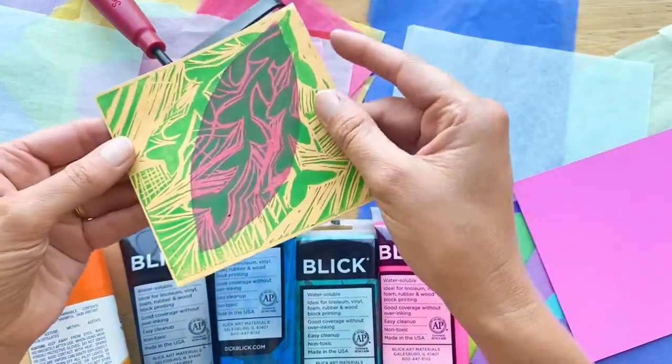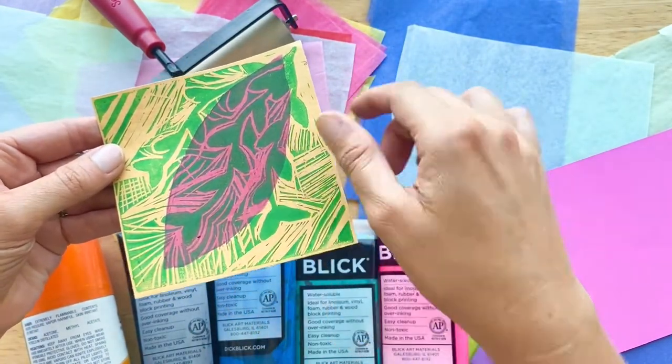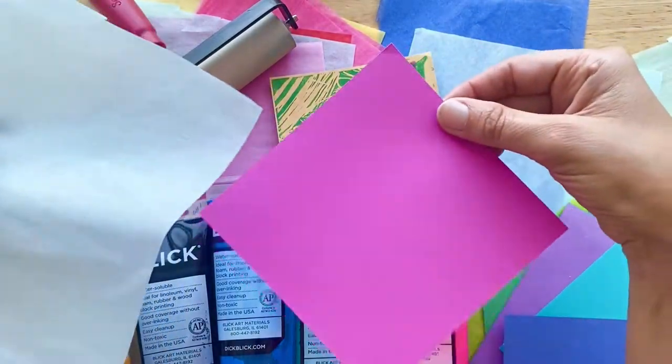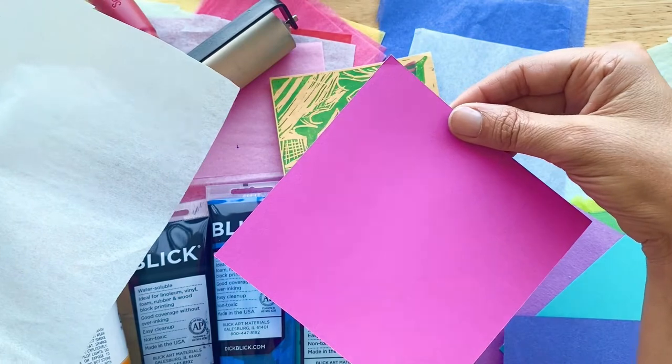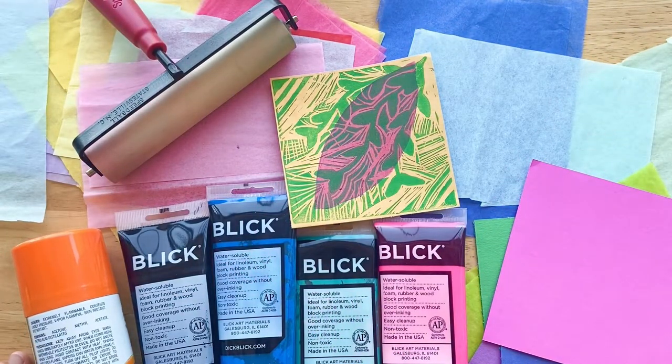Today we'll be making a soft cut linoleum print inspired by a pattern in nature and we'll embellish our prints using a traditional printmaking technique called chincolet where a lighter paper is adhered to a heavier paper during the printing process. This is one of my absolute favorite techniques because of the beautiful contrast it creates.